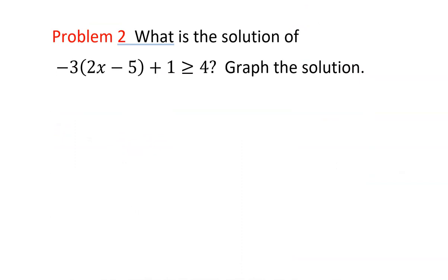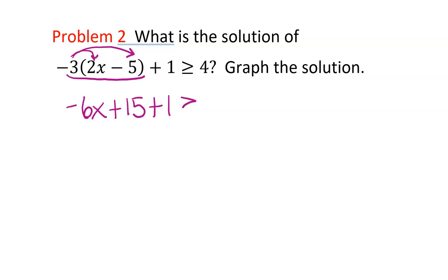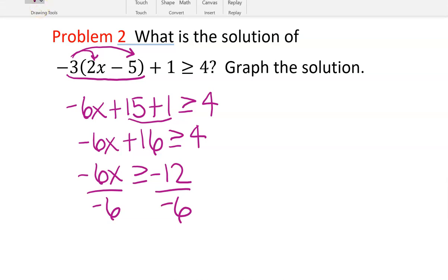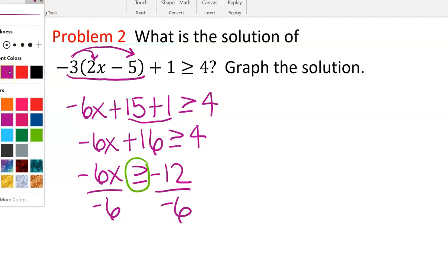Problem number two: what is the solution of negative three times the quantity (two x minus five) plus one, greater than or equal to four, and graph the solution? First, apply the distributive property on the left side: negative three times two x gives negative six x, and negative three times negative five gives plus 15, plus one, greater than or equal to four. Combining like terms: negative six x plus 16 is greater than or equal to four. Subtracting 16 from both sides gives negative 12. Dividing by negative six — and I always circle that to remember the symbol flips.